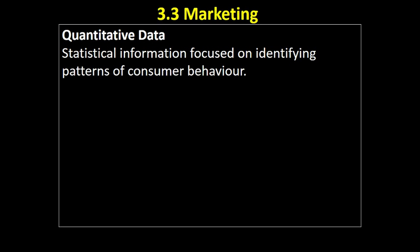There are two types of data that you need to be aware of. The first is quantitative data. The word is related to quantity, so it's all about statistical information. Quantitative data is statistical information that tends to be focused on identifying patterns of consumer behaviour — in other words, looking for trends, looking for the sort of things that consumers are doing.